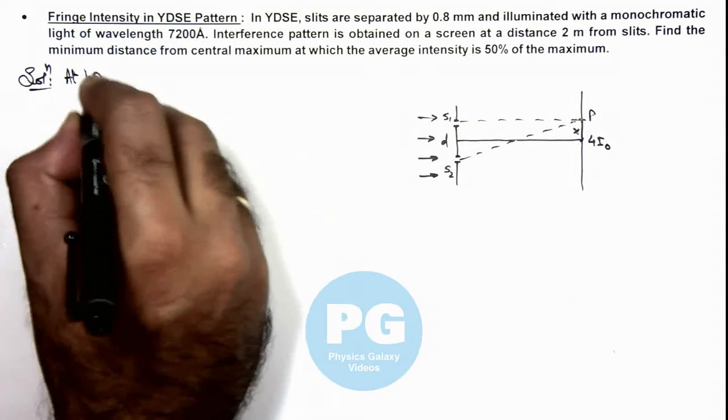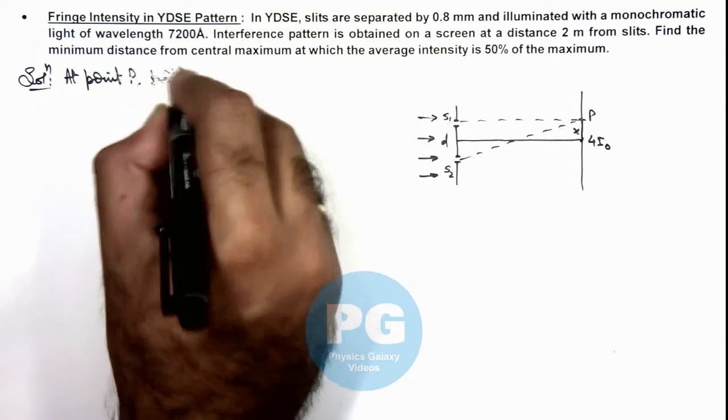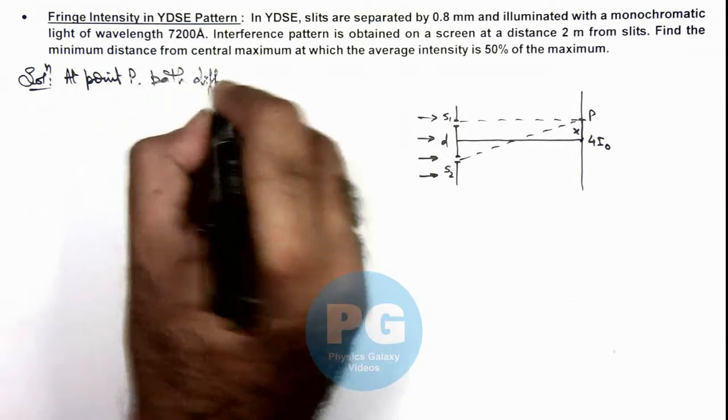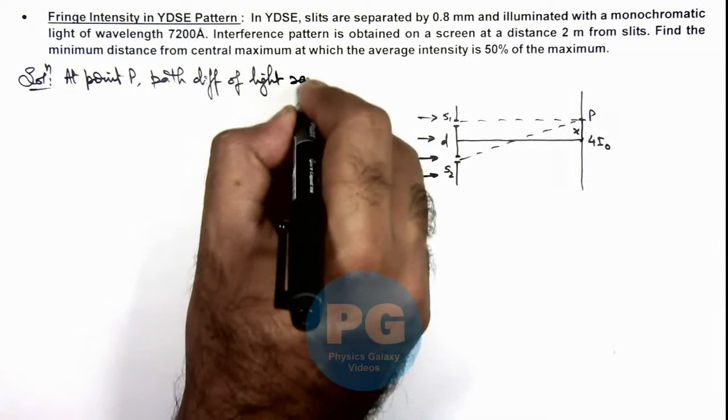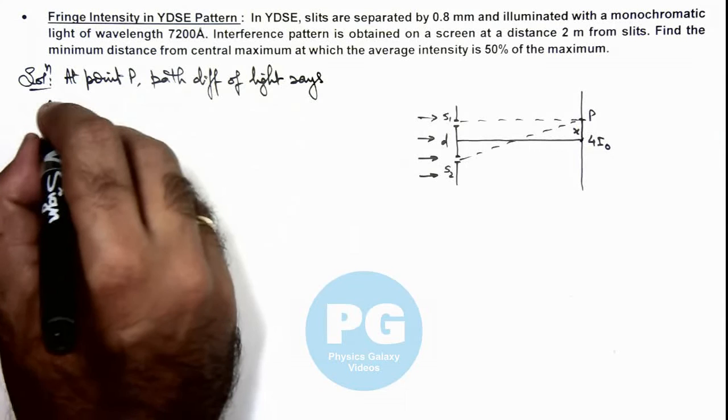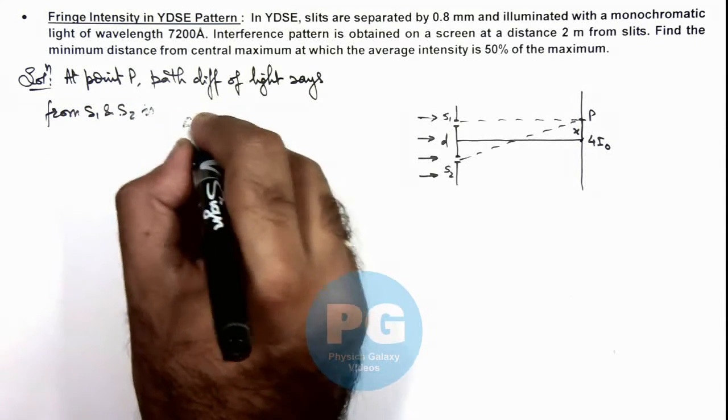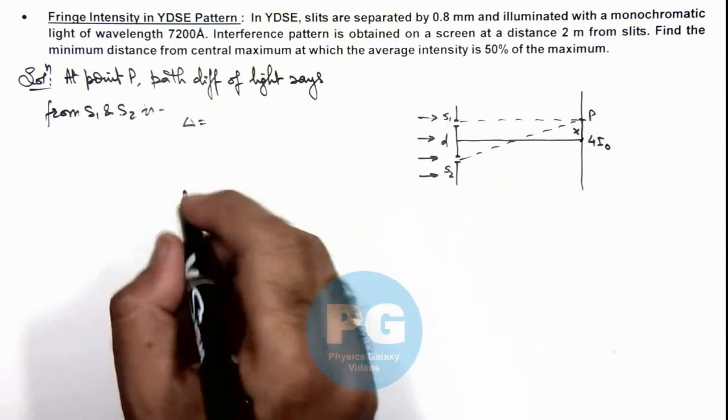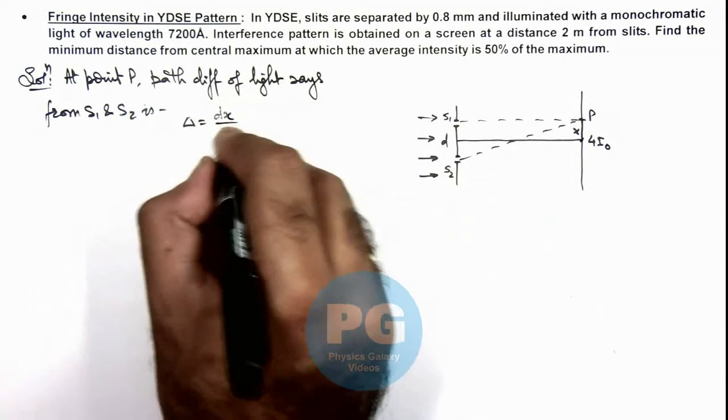At point P, path difference of light rays from S1 and S2 is, this path difference we already studied in concept videos, where it is given as small d times x by capital D.